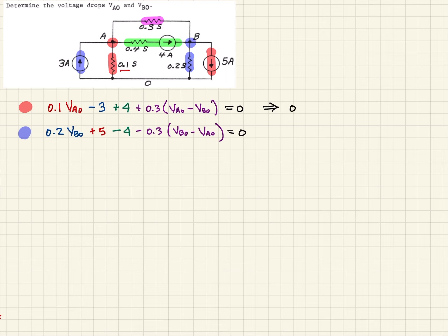So the result of that then is going to be 0.4 times VA0 - again, that's just multiplying things out and combining like terms - and then minus 0.3 times VB0, and that's going to be equal to minus 1.